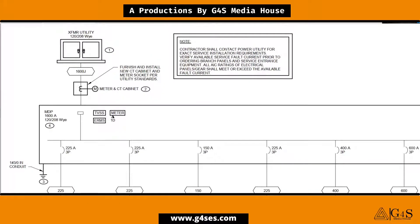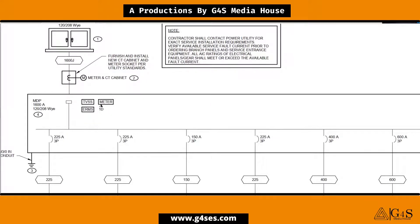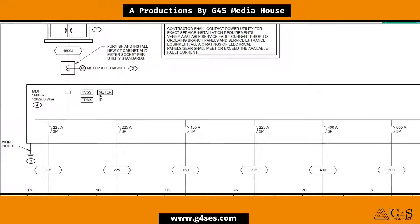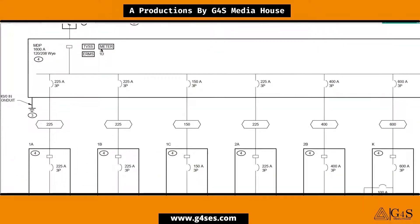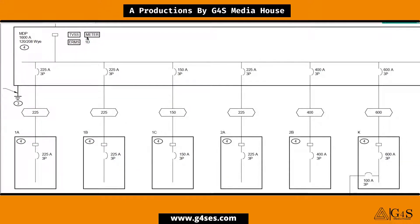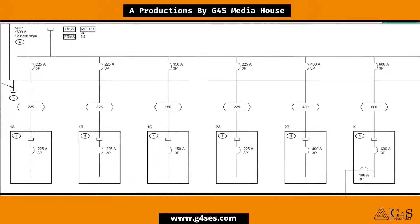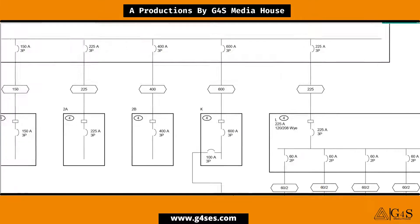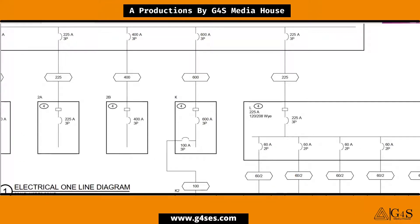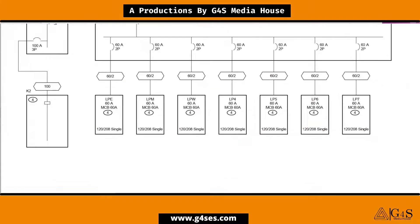Electricity enters the building and is connected to the main distribution panel board, which is also called a switchboard. Then from the switchboard, it is supplied to sub-panels. The wiring that connects the switchboard to the panels is called feeders. Feeder sizes would be different depending upon the sizes of the sub-panels.